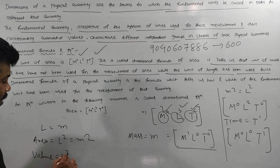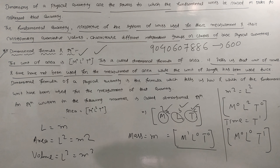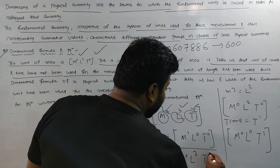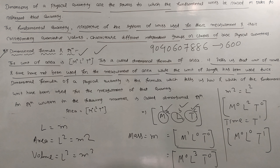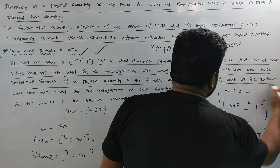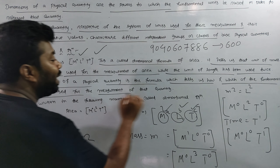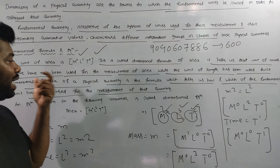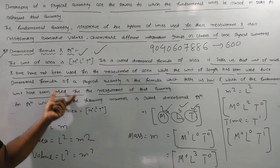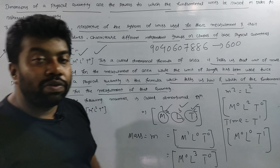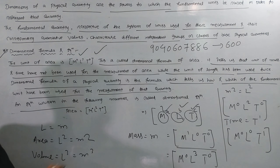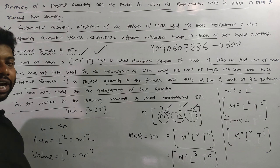What about volume? Volume has dimensional formula M⁰L³T⁰ — length is cubed. The dimensional formula of a physical quantity is the formula which tells us how and which of the fundamental units have been used for the measurement of that quantity. An equation written in this manner is called a dimensional formula.